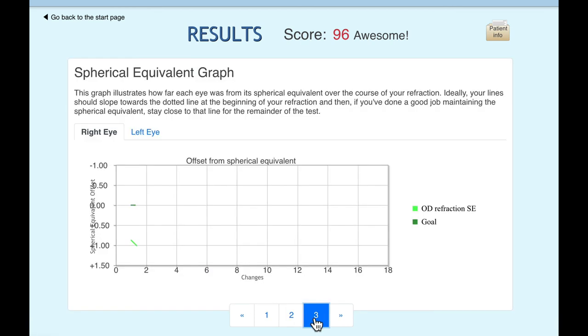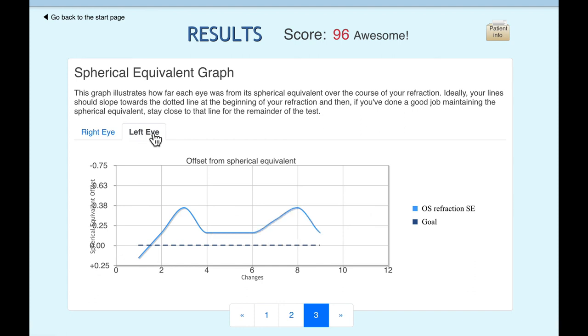Let's look at spherical equivalent. So most important thing here is that at the beginning of the refraction, you establish the spherical equivalent. So you should get close to this line very quickly. And then during your refraction, you might go up and down, but at the end, you really want to be on the spherical equivalent line. That's a good refraction. Get close to it right off the bat and then get on that line by the end. And left eye, hopefully I did just as well. So it was a little bit off the spherical equivalent. And again, look at the scale. It was never more than a quarter to three eighths of a diopter over the spherical equivalent at this point. And most importantly, I was on the line by the end. So I call that a successful refraction.